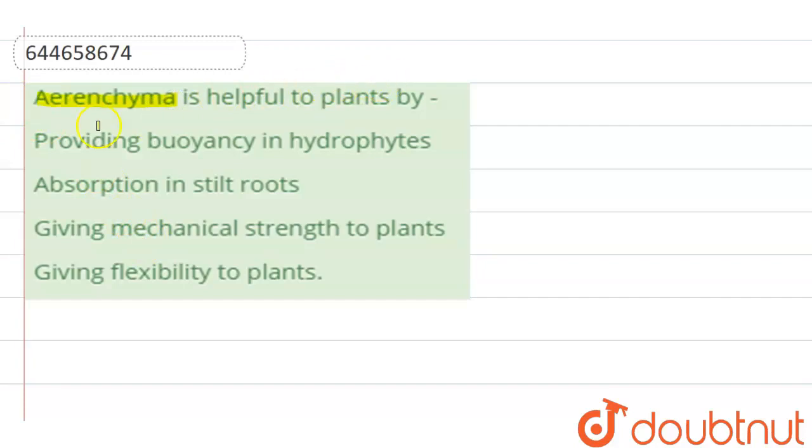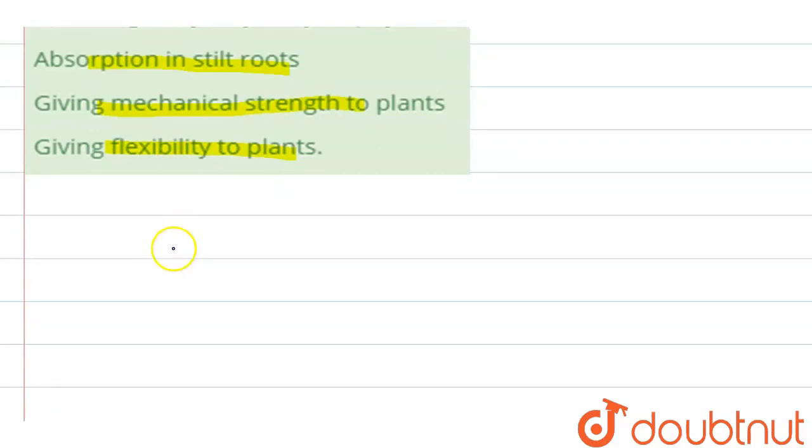Given options are: providing buoyancy in hydrophytes, absorption in stilt roots, giving mechanical strength to plants, giving flexibility to plants. So first, let's understand what aerenchyma is.